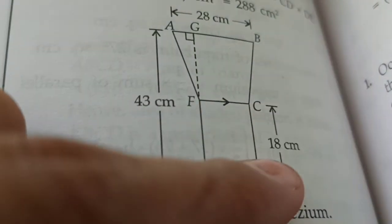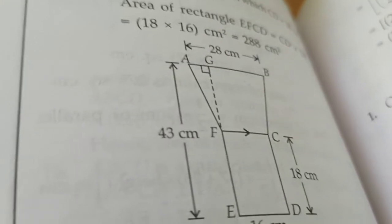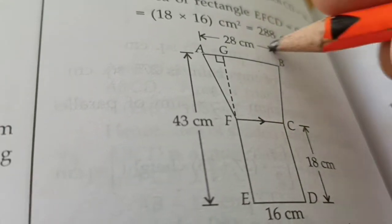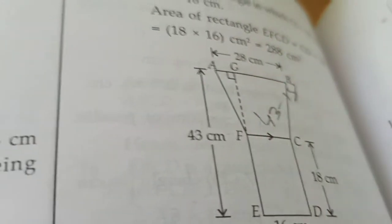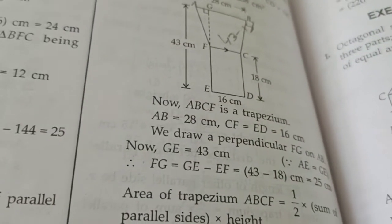This is given 18 cm. This is given 18 cm. And this is the total 43. So, this height is 43 minus 18 cm. That is, which is equal to 25 cm.